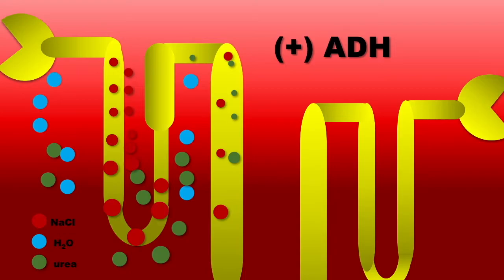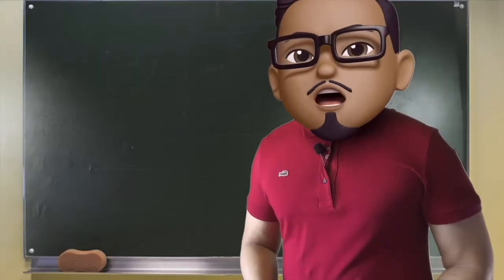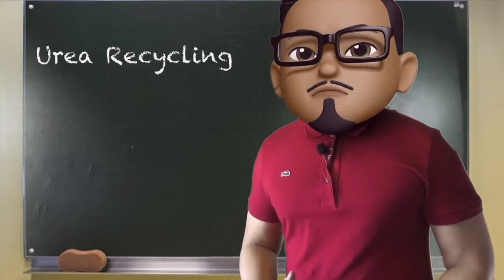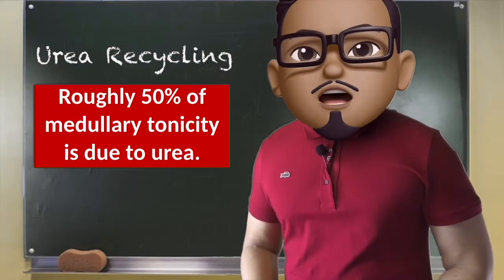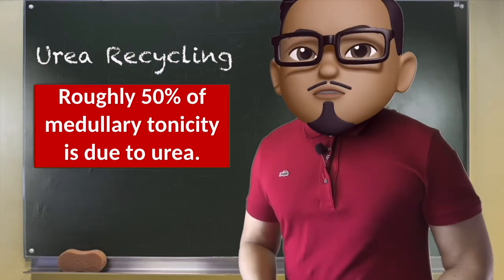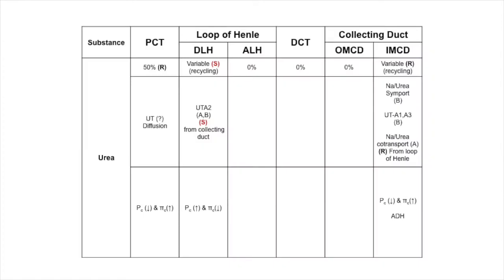Roughly 50% of medullary tonicity is due to urea. Urea, which is a byproduct of ammonium and carbon dioxide from protein metabolism, is important in urine concentration. It is secreted in the descending limb of Henle but reabsorbed in the inner medullary collecting duct, leading to urea recycling.